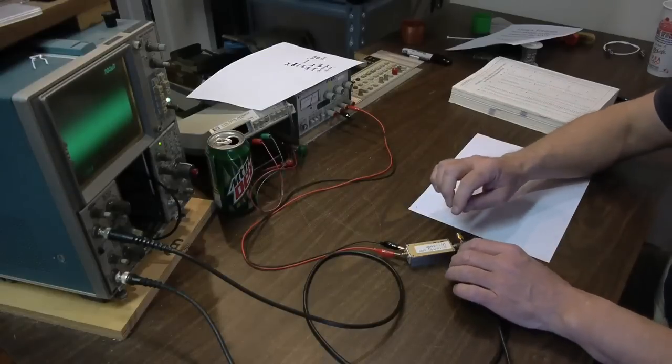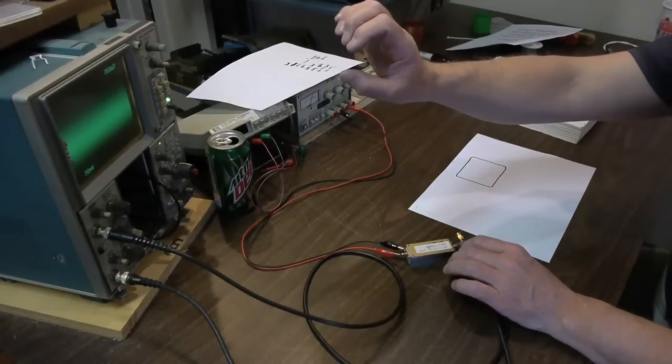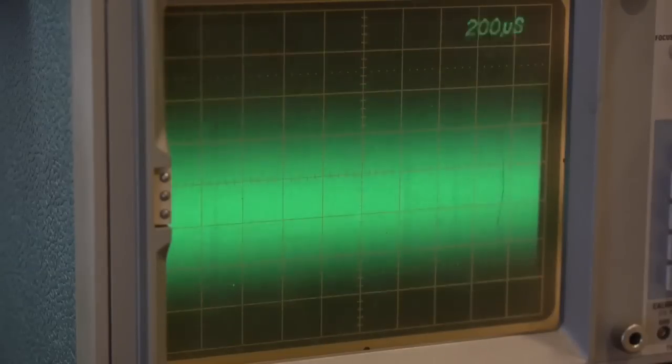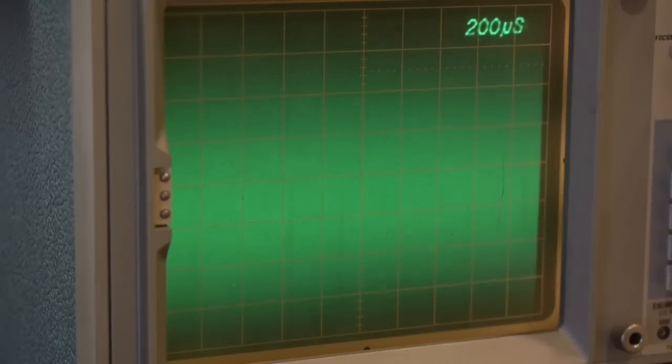I'll demonstrate that. I'll pull the 50 ohm load. We should see the amplitude of the signal on the screen roughly double. Okay? So that's an indication that we are indeed terminated into 50 ohms.